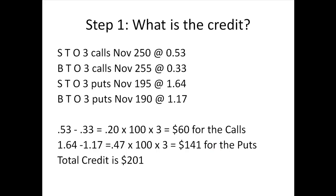Step one: what is our credit on this trade? Let's break it up into calls and puts. For the calls, we're getting 53 cents as a credit because we're selling, and we're paying 33 cents for the buy, so 53 minus 33 equals 20 cents. We multiply by 100 because there are 100 shares per option, and then by 3 because he's doing three spreads. That gives us $60 credit on the call side.